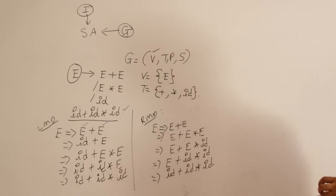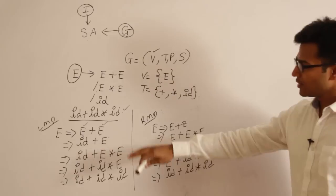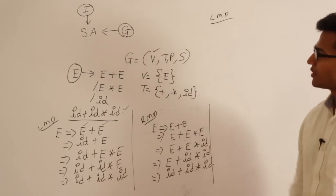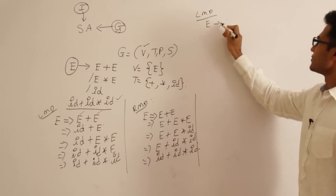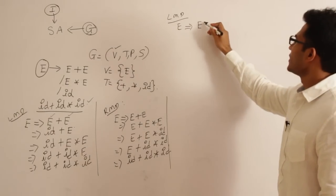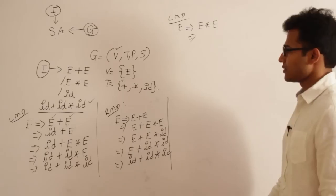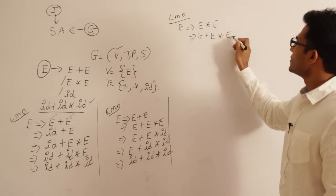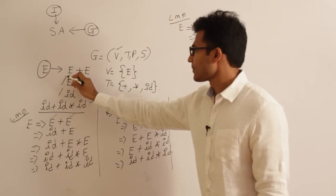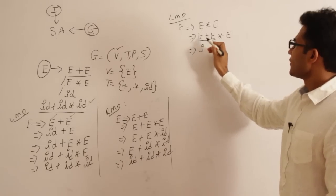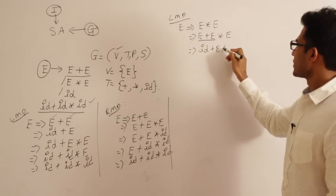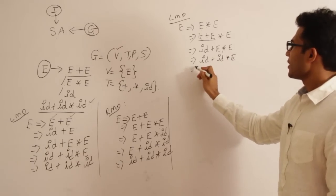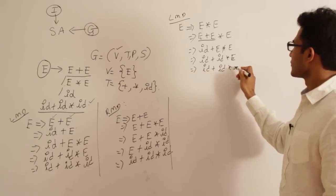Now the question is: is this the only left-most derivation possible, or is there another LMD? It turns out there is another one. Starting with E ⇒ E * E, and taking the left-most E first: E * E ⇒ E + E * E ⇒ id + E * E ⇒ id + id * E ⇒ id + id * id. So we have a second left-most derivation for the same string.